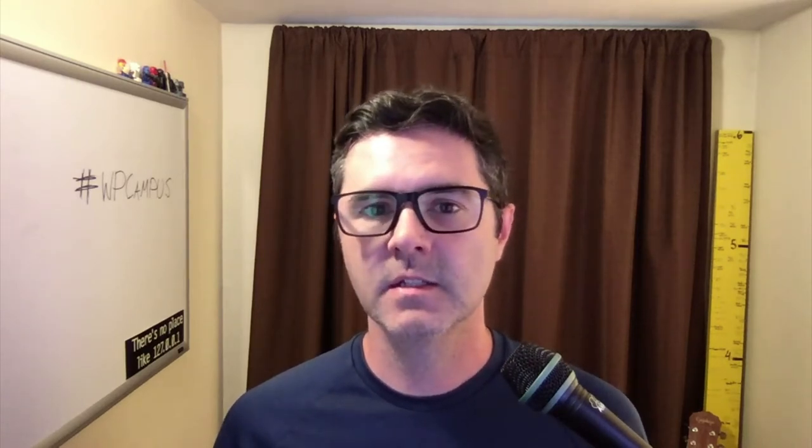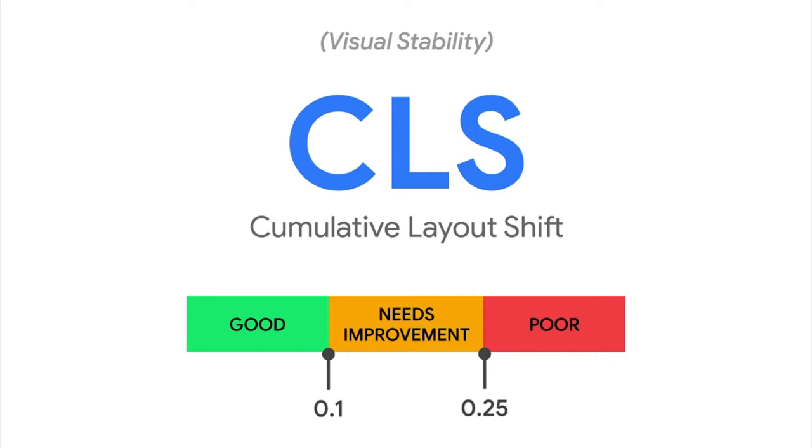Next up is cumulative layout shift, and that is the visual stability metric. CLS is a measure of the largest burst of layout shift scores for every unexpected layout shift that occurs during the entire lifespan of a page. A layout shift occurs any time a visible element changes its position from one rendered frame to the next. The scores: anything less than 0.1 is considered good, 0.1 to 0.25 needs improvement, and anything over 0.25 is poor. Even though you may not be familiar with the term, you've definitely seen it in action — any time you're watching a website load over a slow connection and content is shifting around, that is CLS. It's not just the initial load; it is the entire lifespan of the page, so as the user scrolls down, anything popping in and causing things to shift contributes to the CLS score.